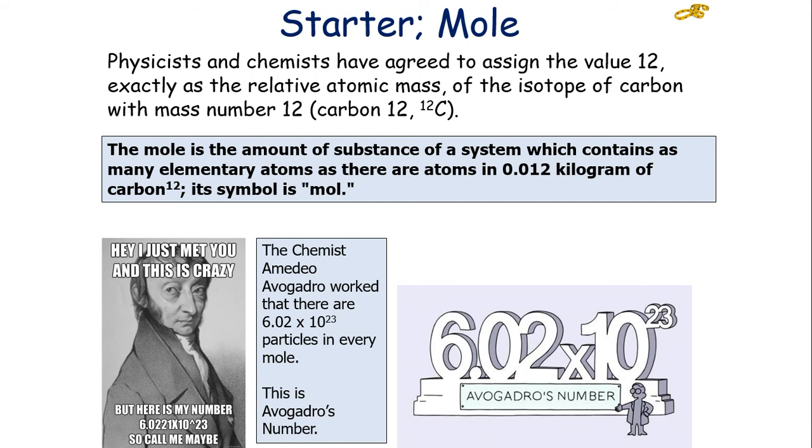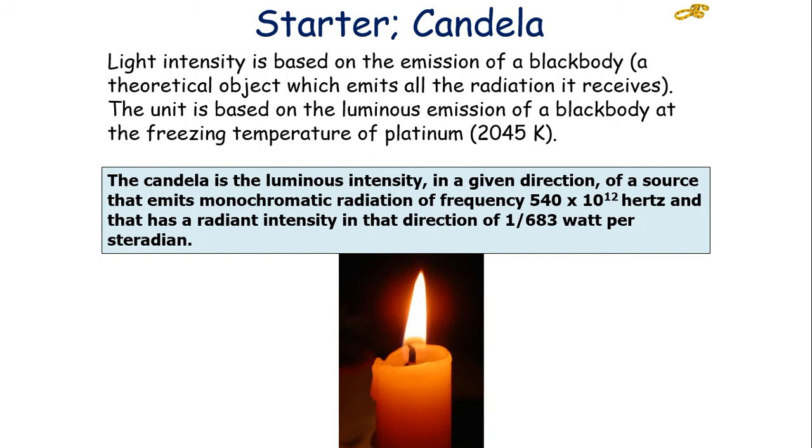Physicists and chemists have agreed to assign a value of 12 exactly as the relative atomic mass of the isotope of carbon with mass number carbon-12. So the mole is the amount of a substance of a system which contains as many elementary atoms as there are atoms in 0.012 kilograms of carbon, which the chemist Amadeo Avogadro worked out to be 6.02 times 10 to the 23 particles, which is Avogadro's number. The candela is based on the emission of a black body, which is a theoretical object which emits all the radiation it receives. The unit is based on the emission of a black body at the freezing temperature of platinum, which is 2,045 Kelvin, and it links into the intensity of monochromatic radiation of frequency 512 Hertz, which has been emitted out into the universe.